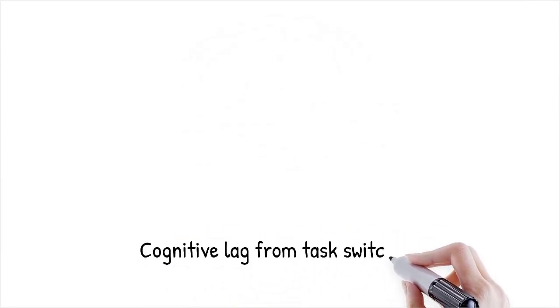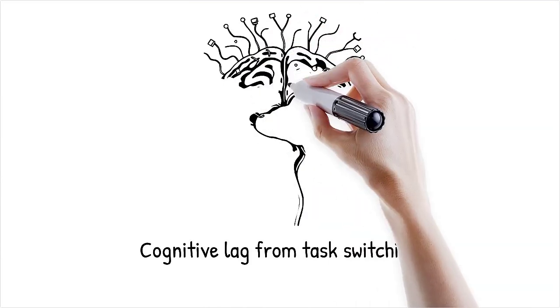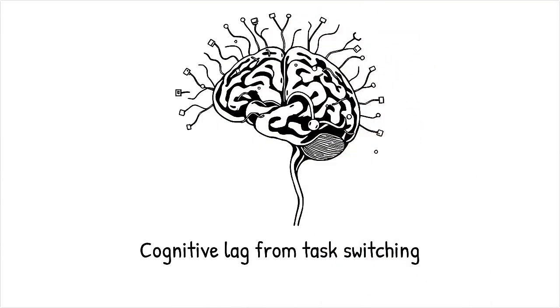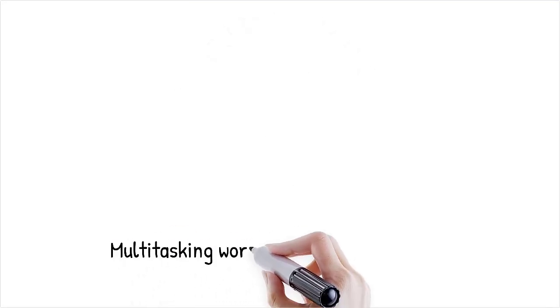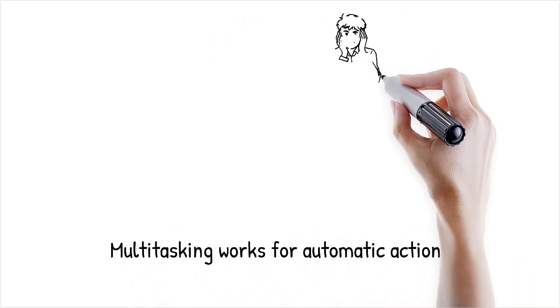When switching between activities, the brain experiences cognitive lag, increasing errors and reducing efficiency. Multitasking works only for automatic actions like walking and talking, but not for tasks requiring deep concentration.